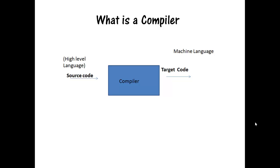Hello everybody. Today I am going to talk on introduction to compiler and phases of compiler. A compiler is a special computer program that converts the source code written in a high level language into the target code, which is machine language. Every high level programming language comes with a compiler.